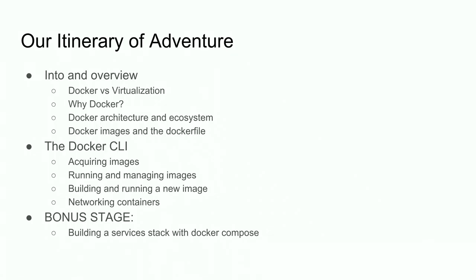Here's our itinerary. We'll go through a brief introduction and overview of Docker, why it's different from a VM, why you might use it, the Docker architecture and ecosystem, then quickly touch on Docker images — the foundation of Docker — and move into a brief overview of the Dockerfile. Then we move into the Docker CLI for the workshop component: acquiring an image, running and managing images, building and running a new image, and then networking containers together.